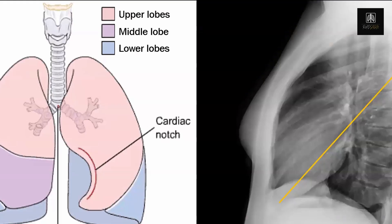What's important about the lobes on chest X-ray is that the upper lobes can be considered the anterior lobes, and the lower lobes are posterior. Note how far superiorly the lower lobe comes up — so it's not really a cranial-caudal thing as much as it is an AP phenomenon.